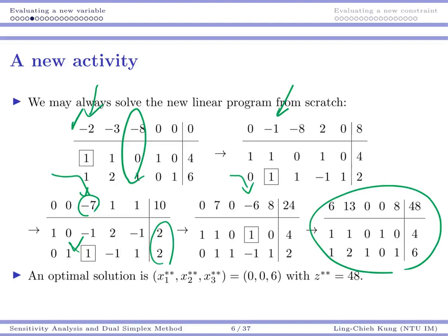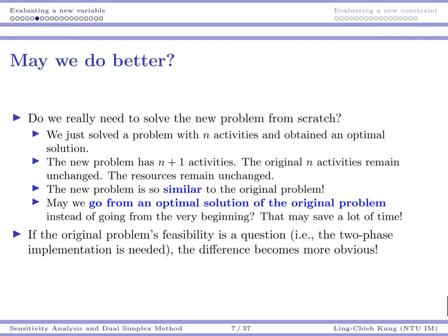Your optimal solution is that you should spend everything you have on product 3, and you are able to produce 6 units of product 3 and eventually earn $48. This must be an optimal plan. There's no reason to consider product 1 and product 2 because you have already used the simplex to solve the problem and get an optimal solution.